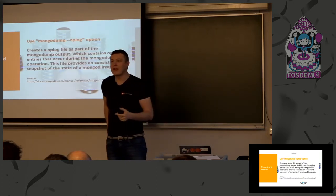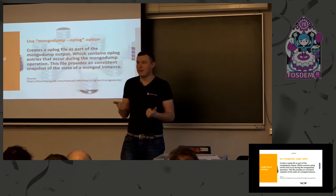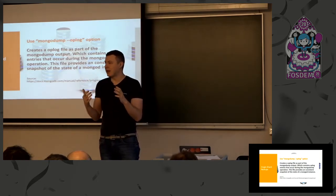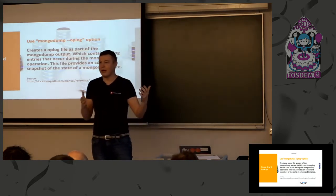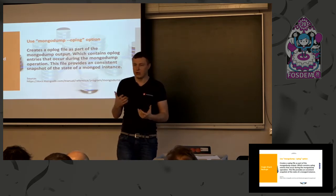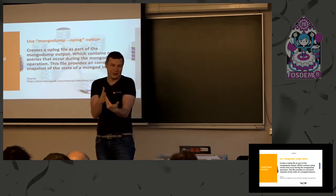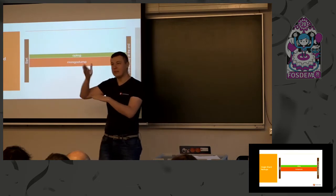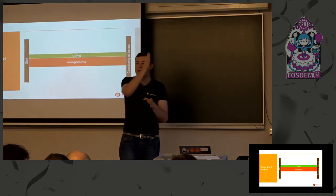But there is a workaround. We have the Oplog option for MongoDump, which is pretty simple. That option stores all write operations to your collection in a separate file. After all, you have a backup and you have the Oplog. During restore, the MongoRestore tool restores the backup and then replays those operations to your database, giving you consistency — but consistency at the end of the backup, not like other databases where you have consistency at the beginning.